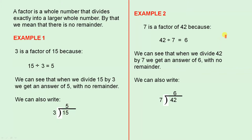Example 2. 7 is a factor of 42 because 42 divided by 7 equals 6. We can see that when we divide 42 by 7, we get an answer of 6 with no remainder. We can also write 7 divided into 42 gives us 6.